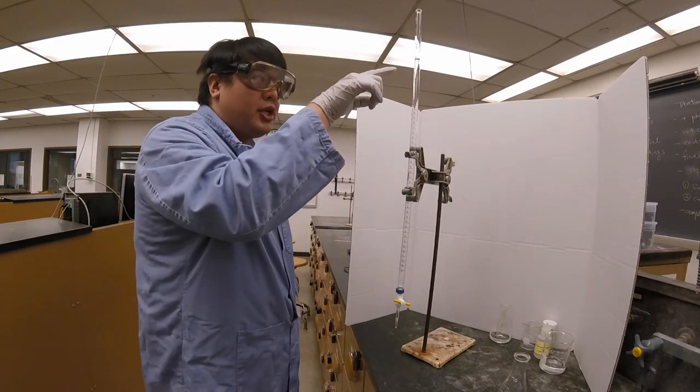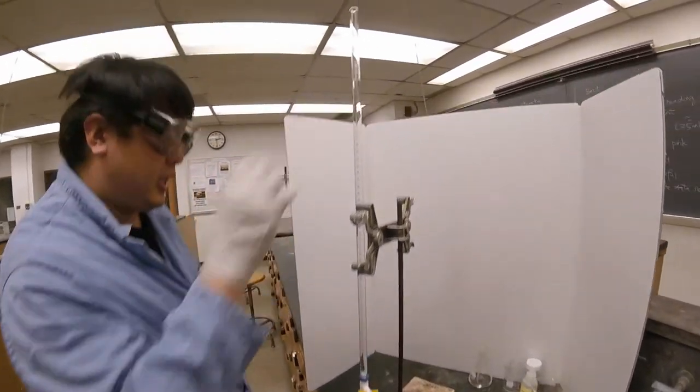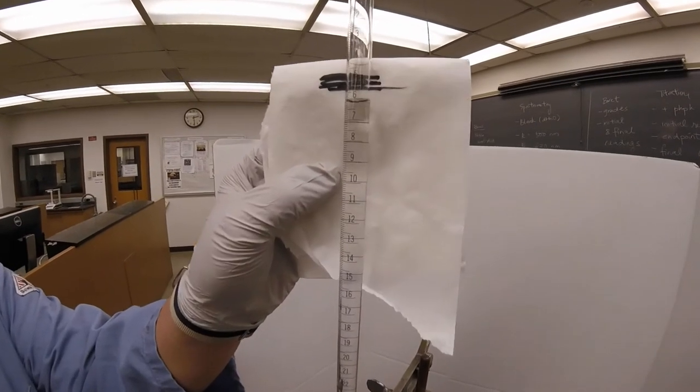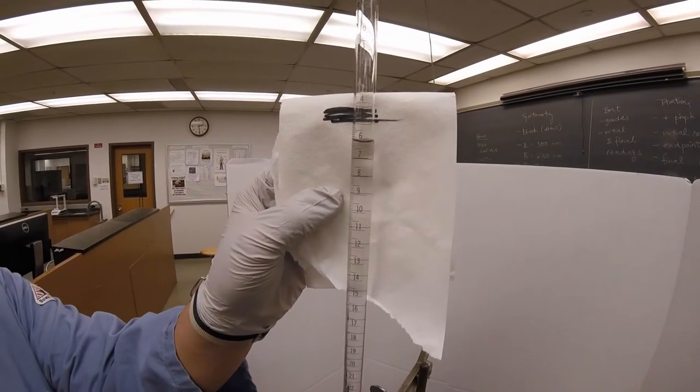Now the major tick lines, you can see identified with the numbers over here, but the minor tick lines, you'll notice that there are 10 in between each major tick line.